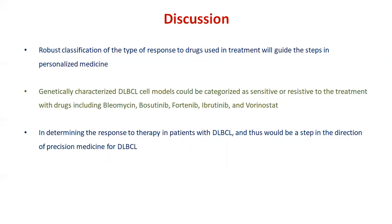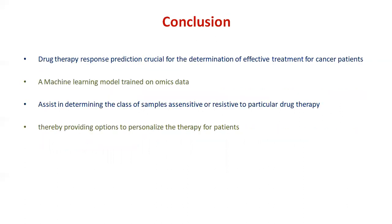To conclude, drug therapy response prediction is crucial for determining effective treatment for cancer patients. Machine learning models trained on omics data can assist in determining whether a sample is sensitive or resistant to a particular drug therapy, thereby providing options for personalized therapy for patients. Thank you.